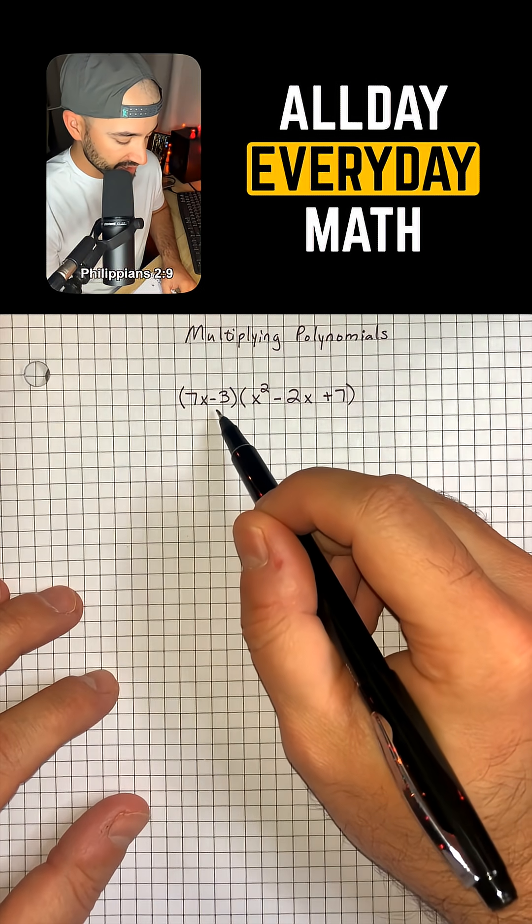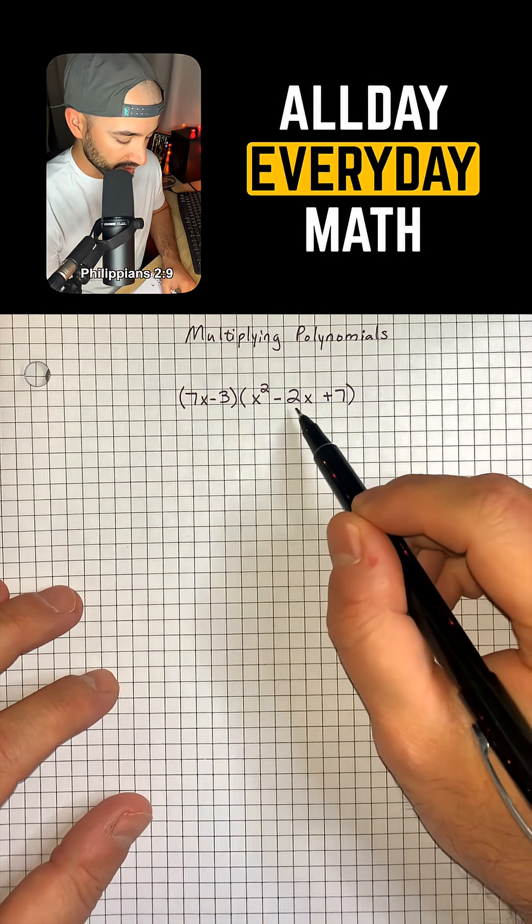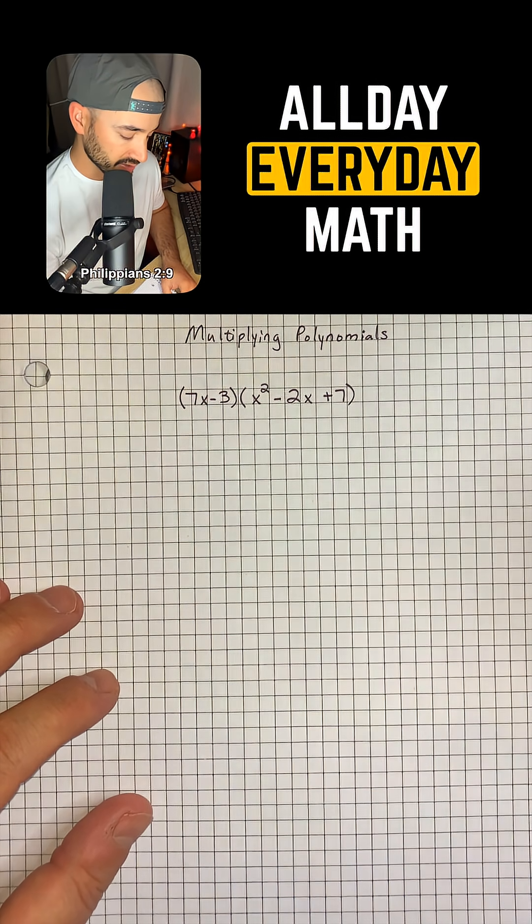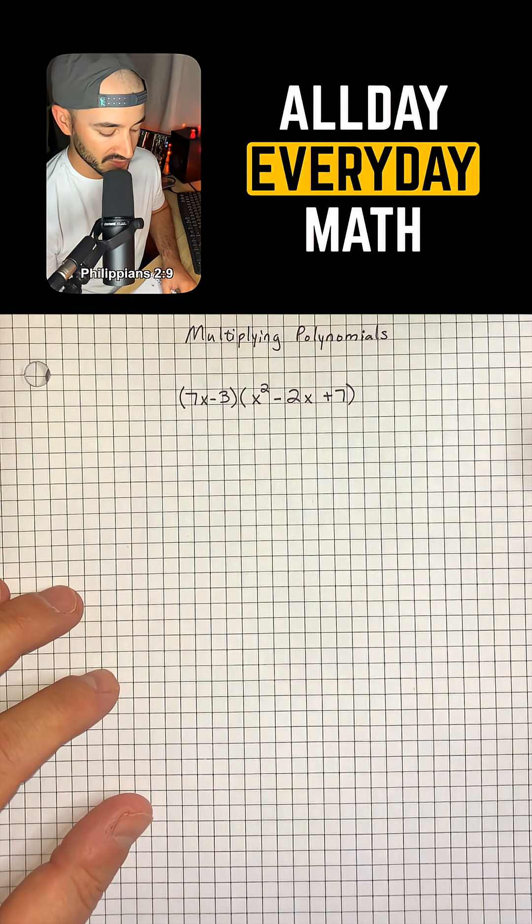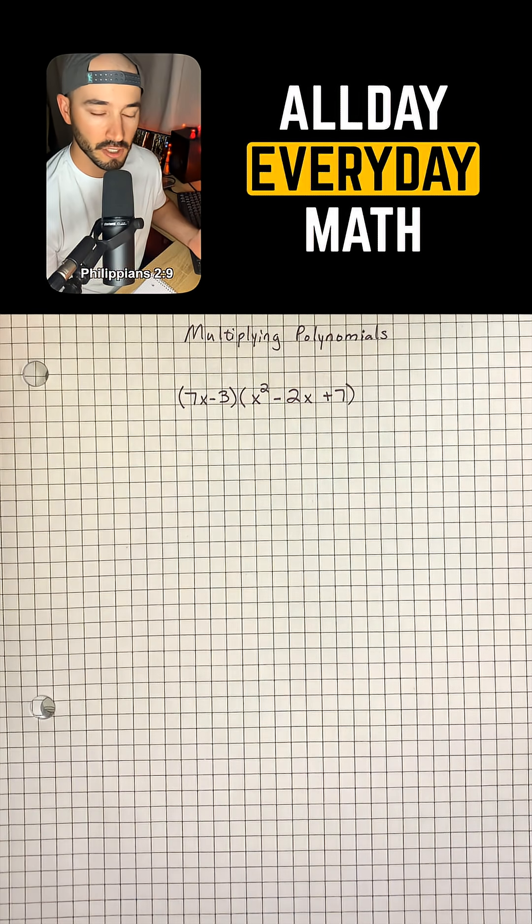So we have the problem 7x minus 3 times x squared minus 2x plus 7. The way that we can multiply polynomials is basically to use the distributive property.